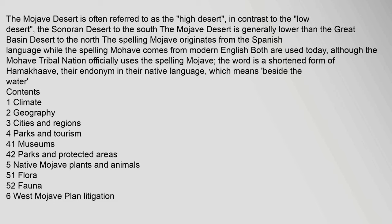The Mojave Desert is often referred to as the high desert, in contrast to the low desert, the Sonoran Desert to the south. The Mojave Desert is generally lower than the Great Basin Desert to the north. The spelling Mojave originates from the Spanish language while the spelling Mojave comes from modern English. Both are used today, although the Mojave tribal nation officially uses the spelling Mojave. The word is a shortened form of Hamakhave, their endonym in their native language, which means beside the water.